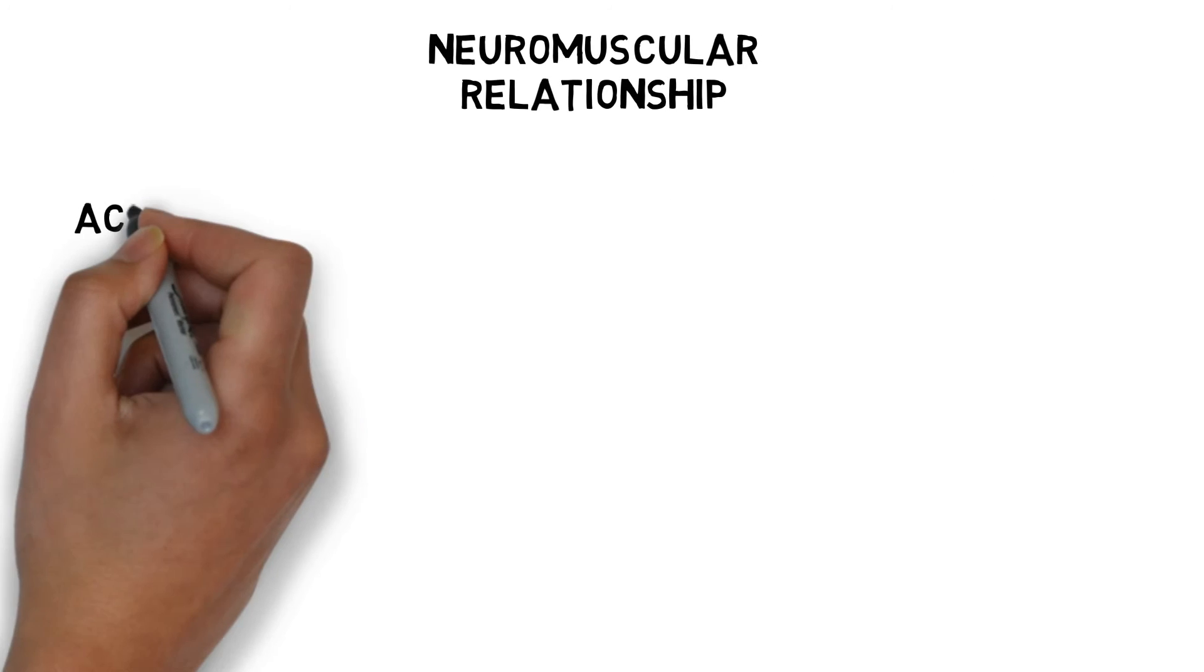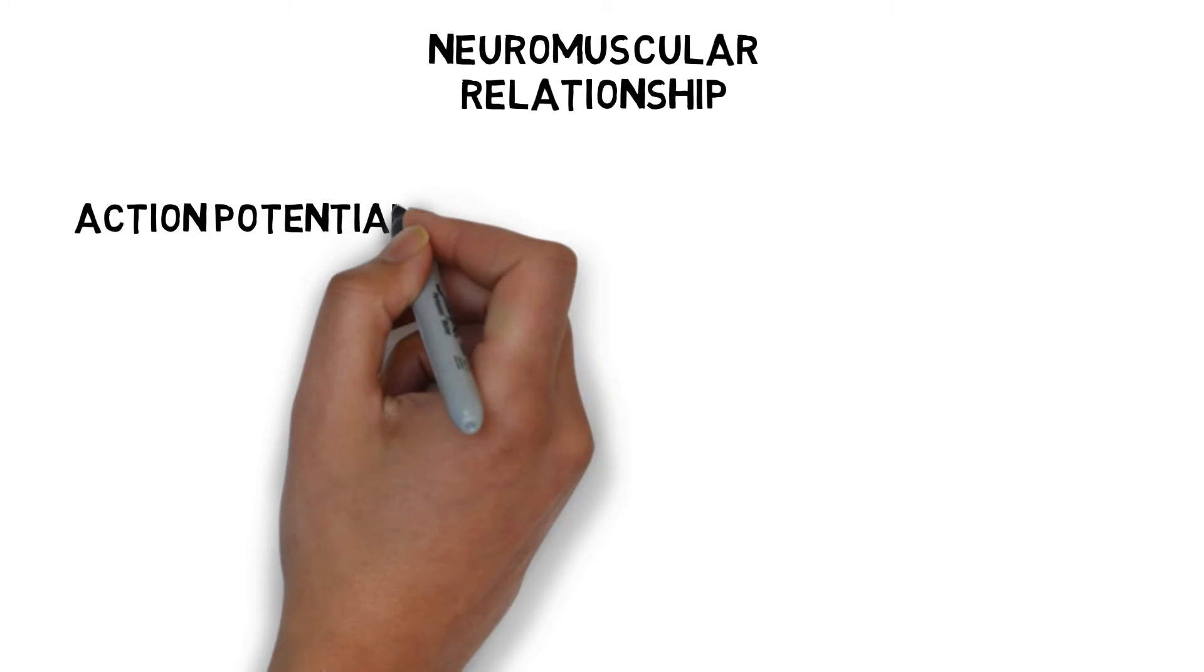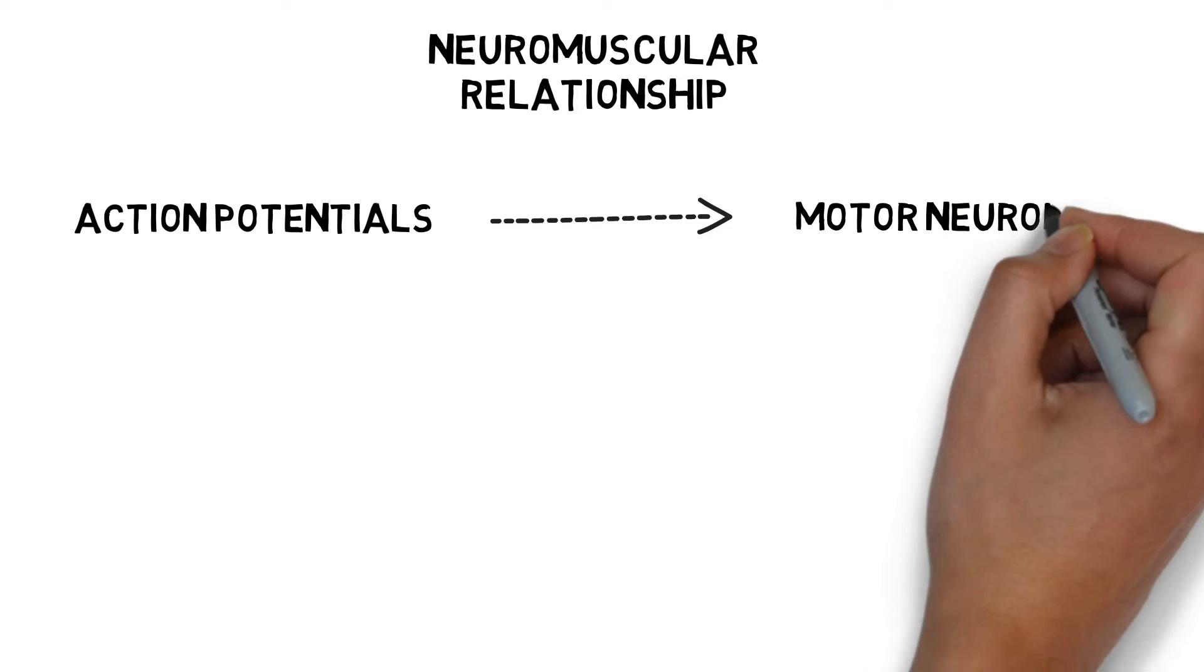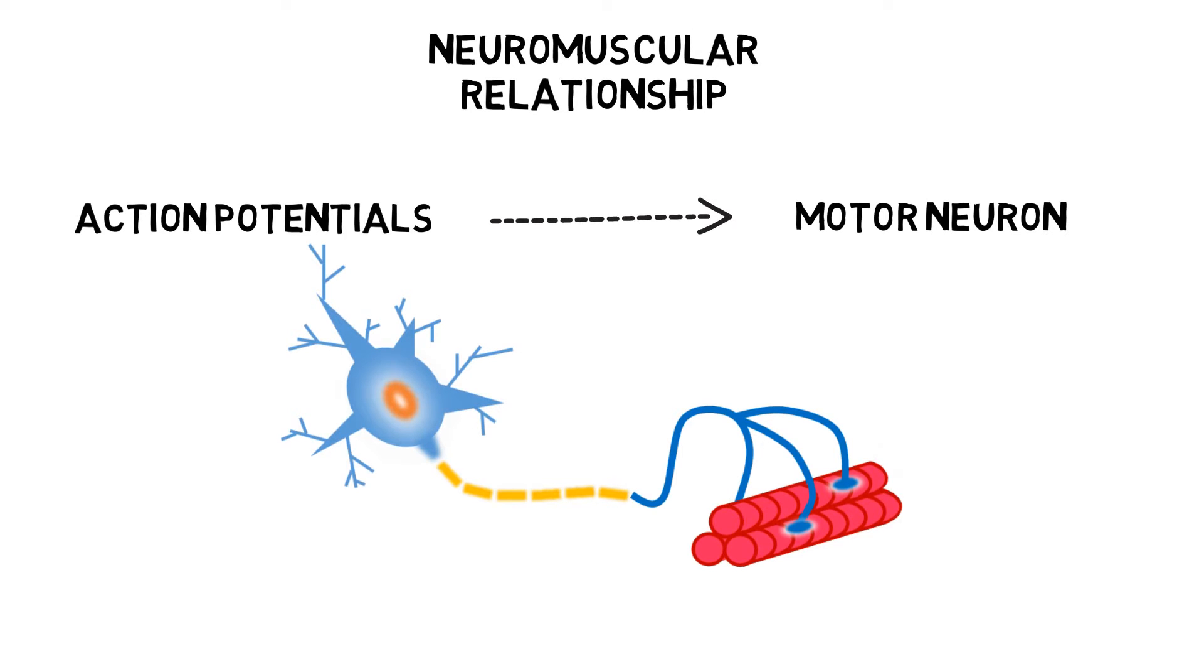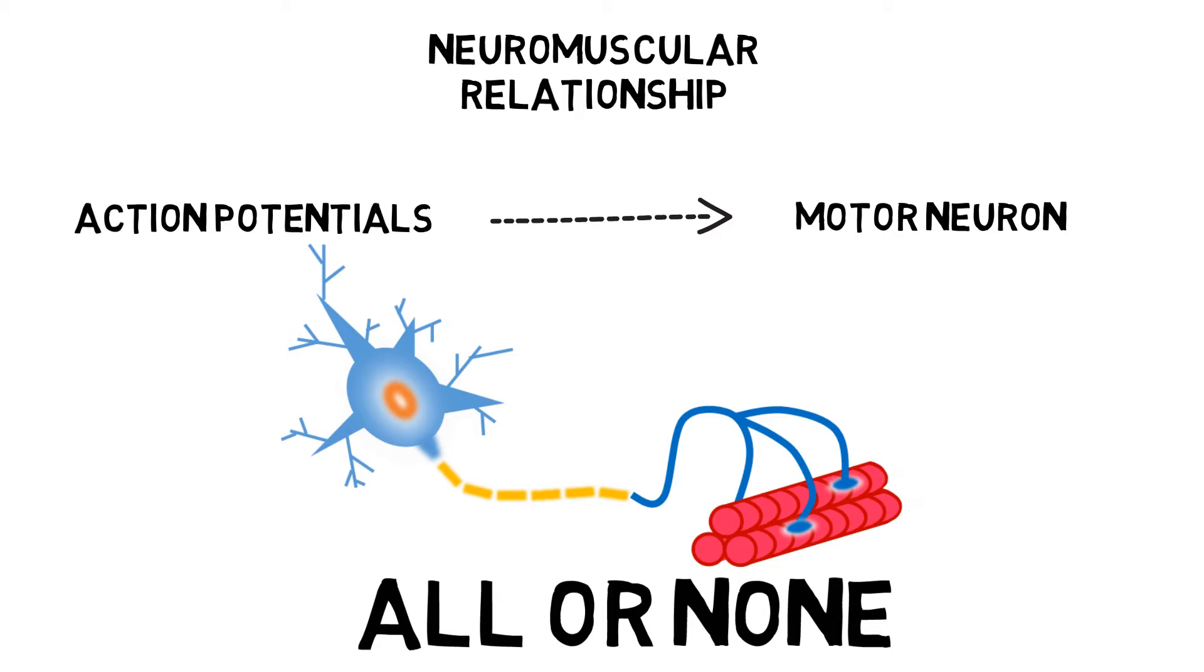Skeletal muscle contracts when electrical nerve impulses from the nervous system, known as action potentials, travel down a specialized nerve called a motor neuron. A single motor neuron and the block of muscle fibers which it controls is called a motor unit. When the motor neuron is stimulated, all of the connecting fibers are immediately activated. This is known as the all or none law.